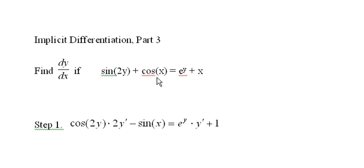And then we have the cosine of x and the derivative of that is negative sine of x. We have a negative sign here. The derivative of e to the y is just e to the y times y prime. And the derivative of x with respect to x is just one.